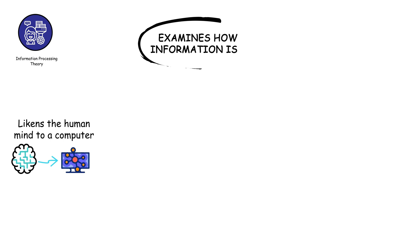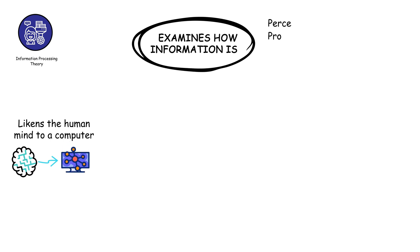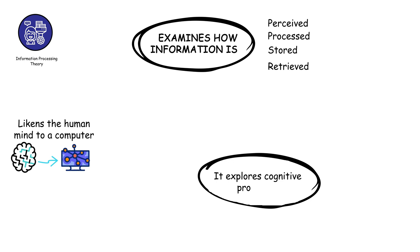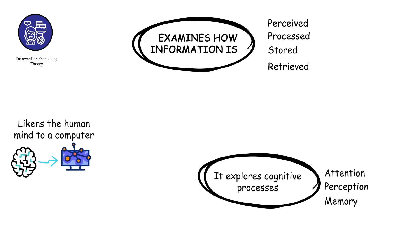Information processing theory likens the human mind to a computer, examining how information is perceived, processed, stored, and retrieved. It explores cognitive processes like attention, perception, memory, and problem-solving.